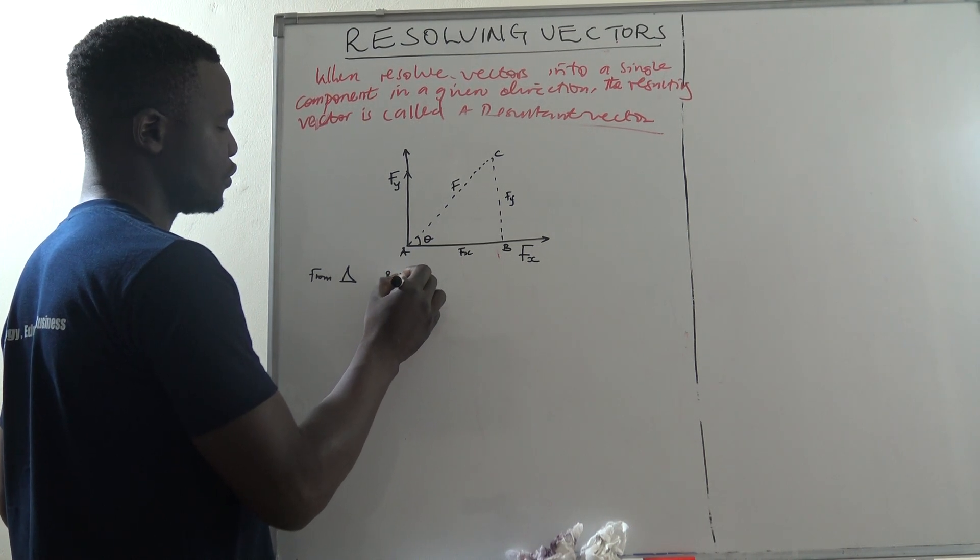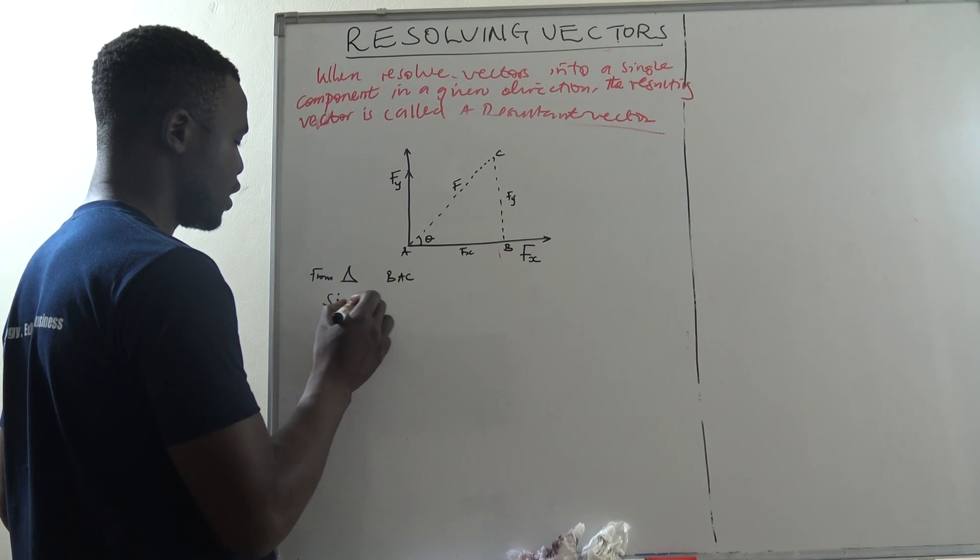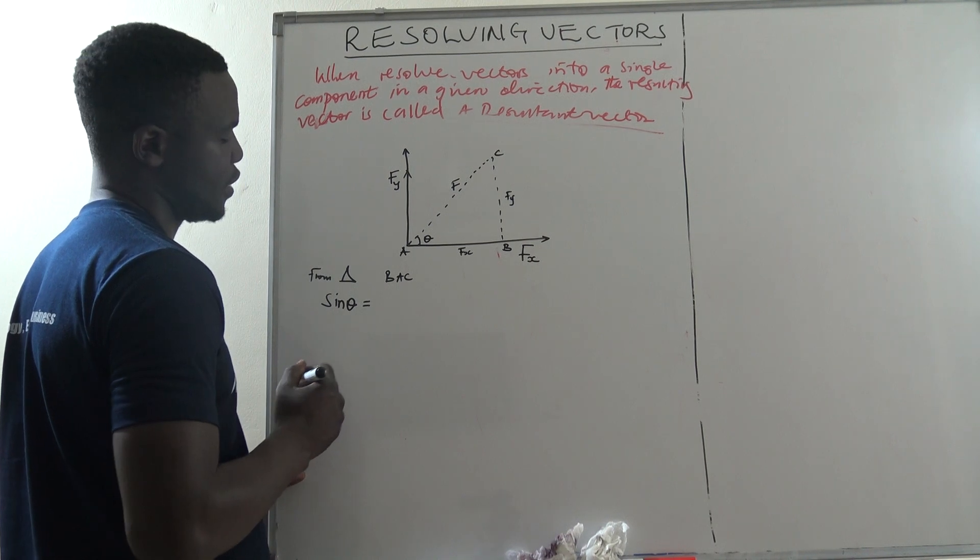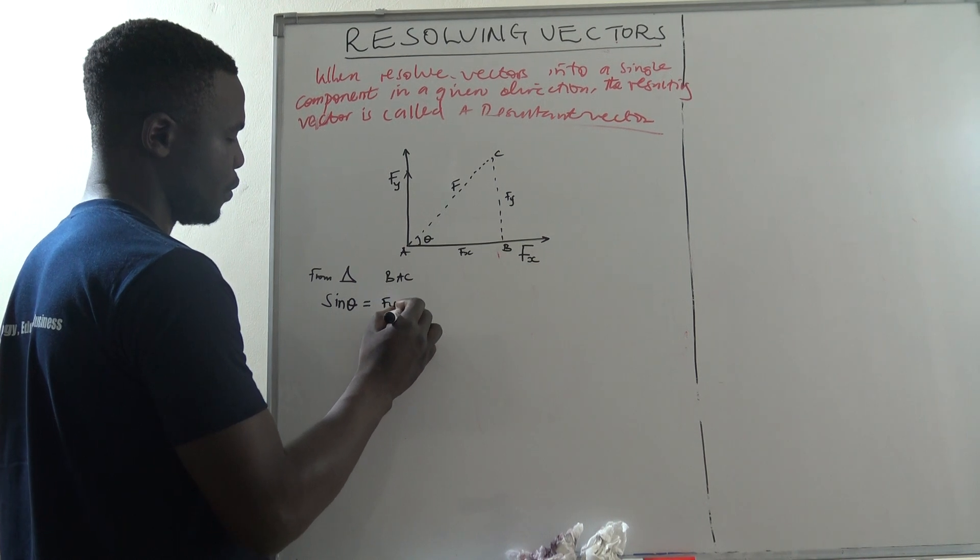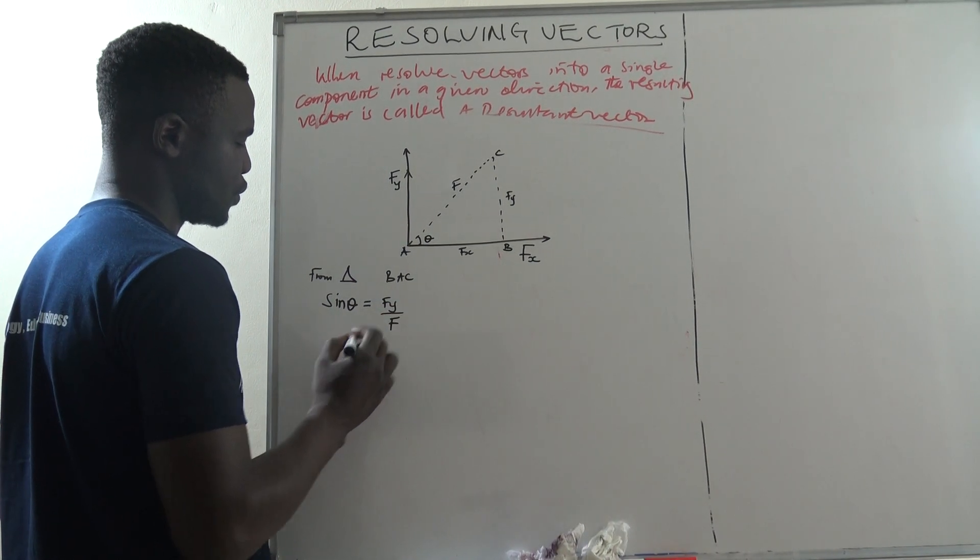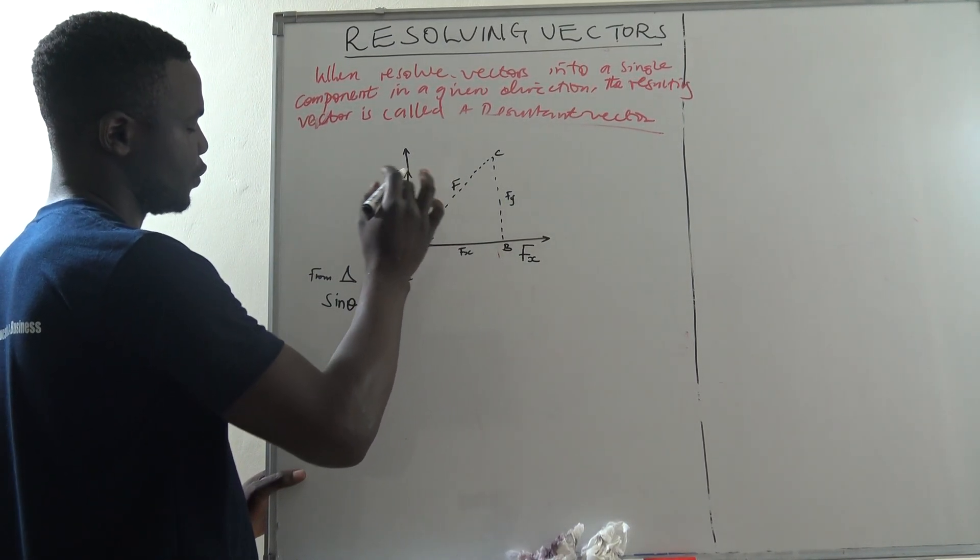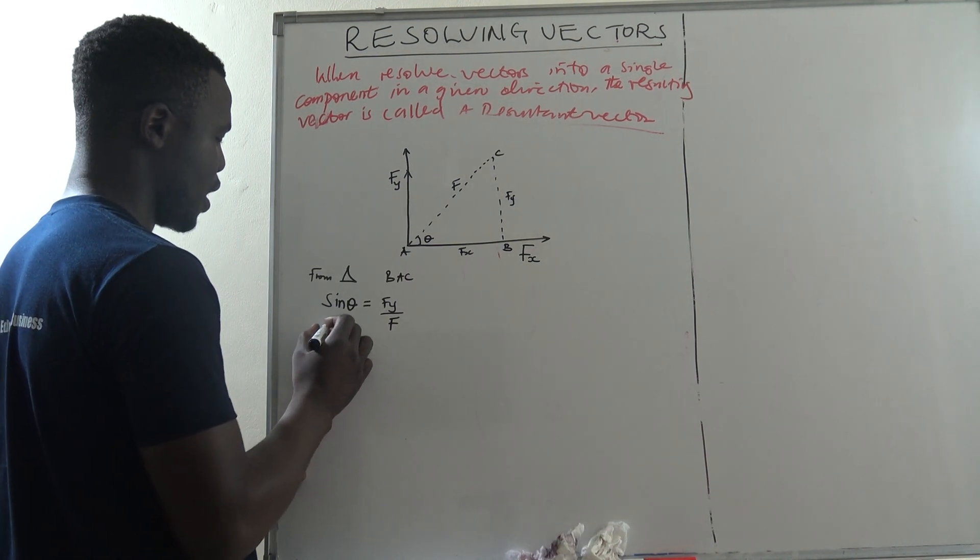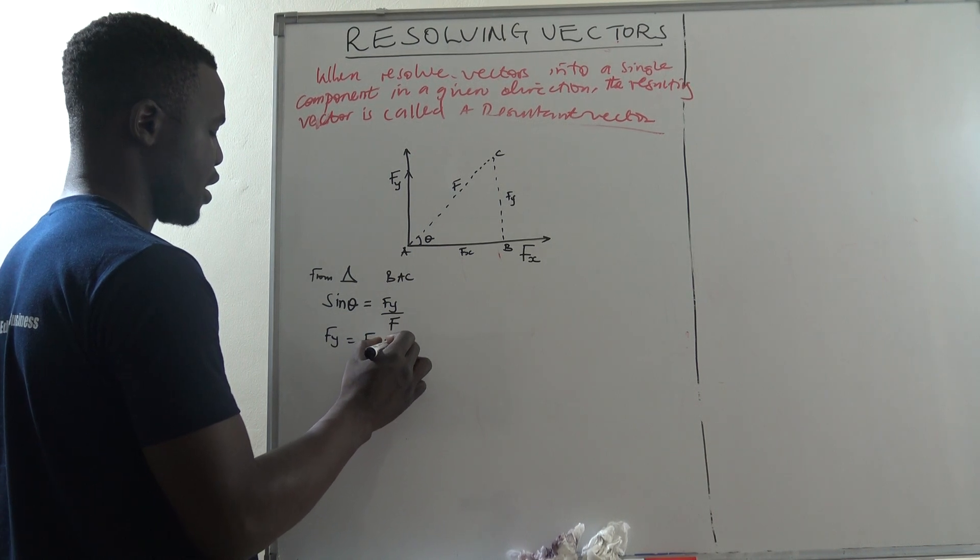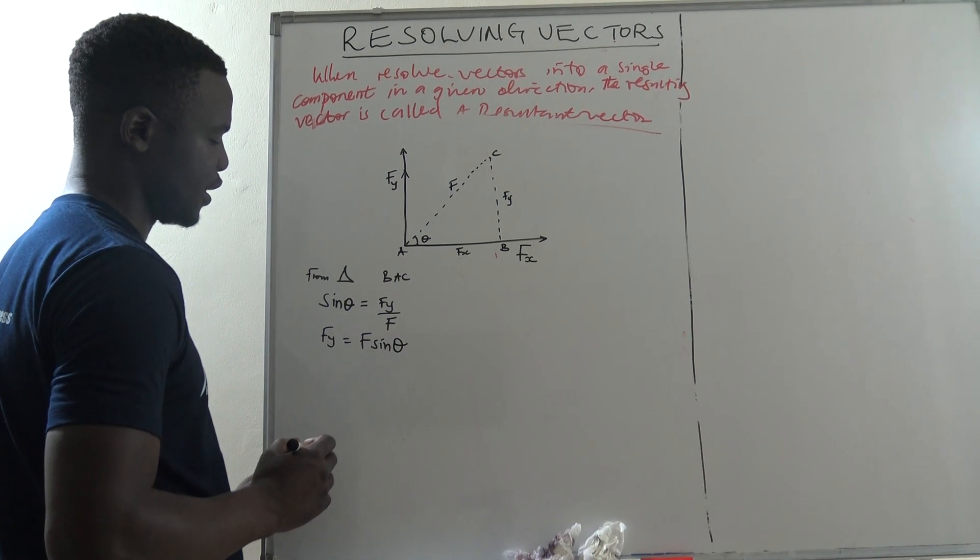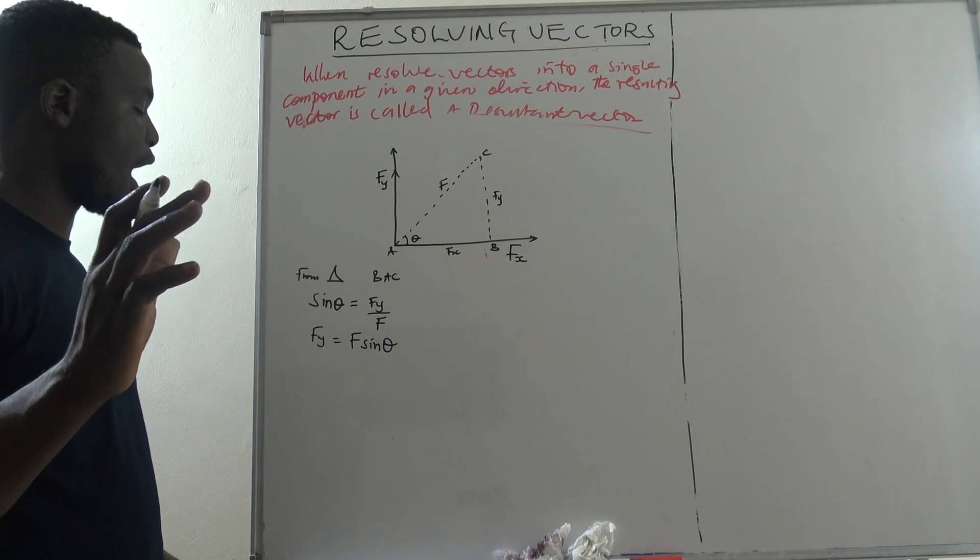So we see that from triangle BSE, we look at the trigonometric ratio of sine. We see that sine is equal to opposite, this is Fy, over the hypotenuse. So this tells us that sine here is opposite over the hypotenuse. And when we make Fy the subject, we realize that Fy is F sine theta. So this becomes something that is very crucial and necessary.